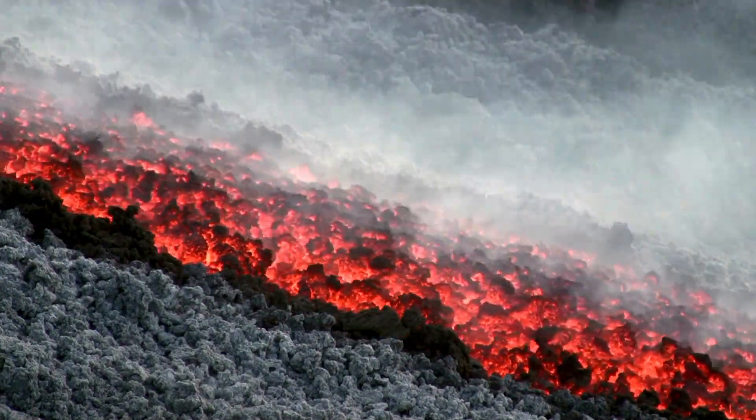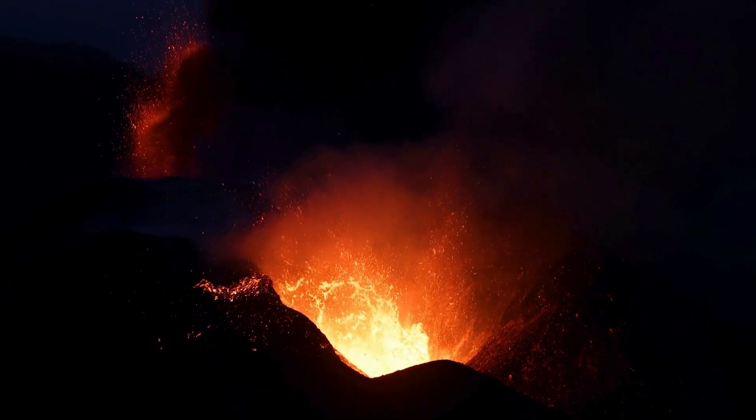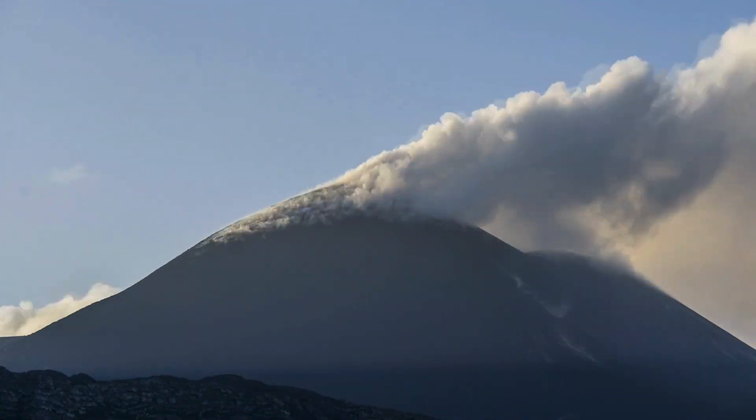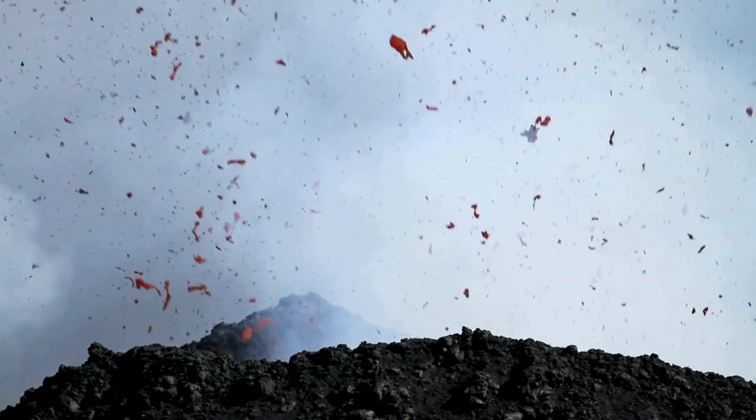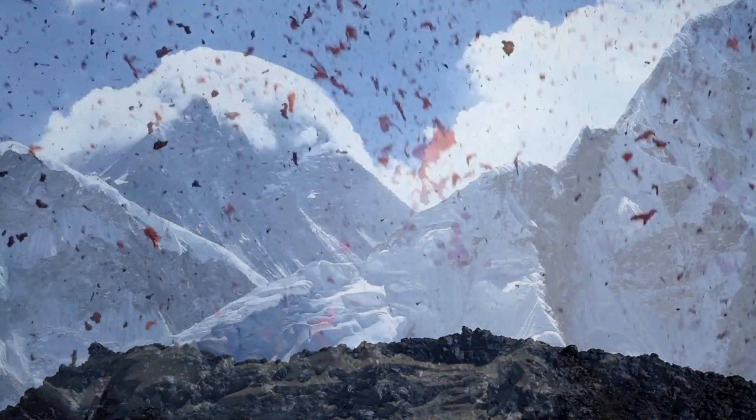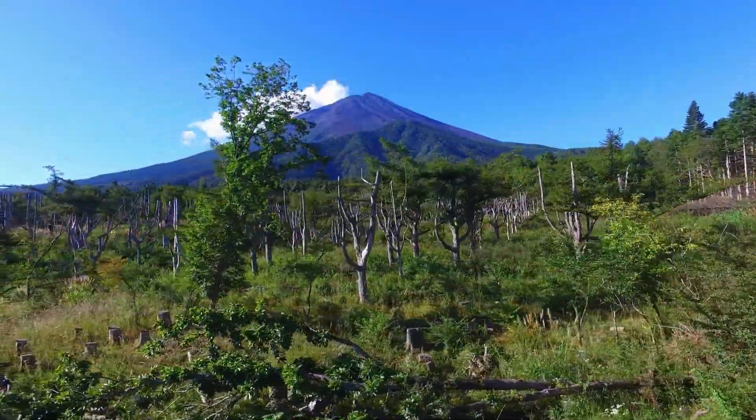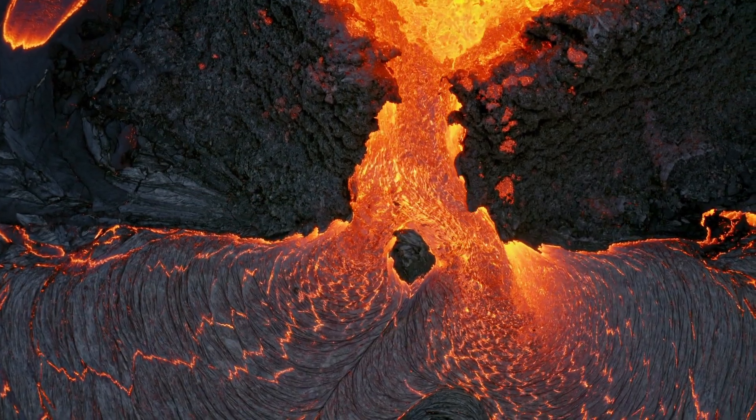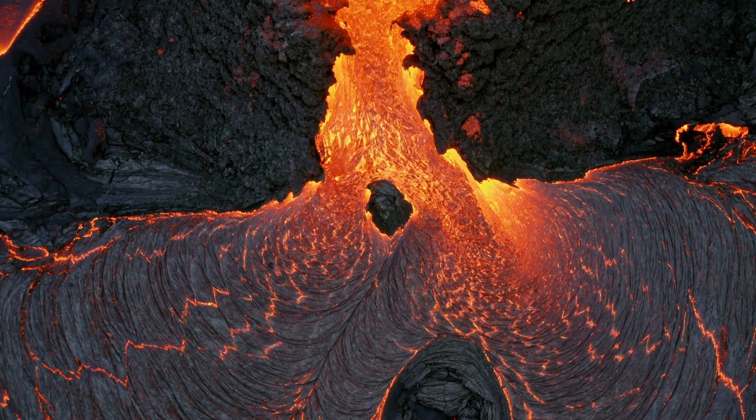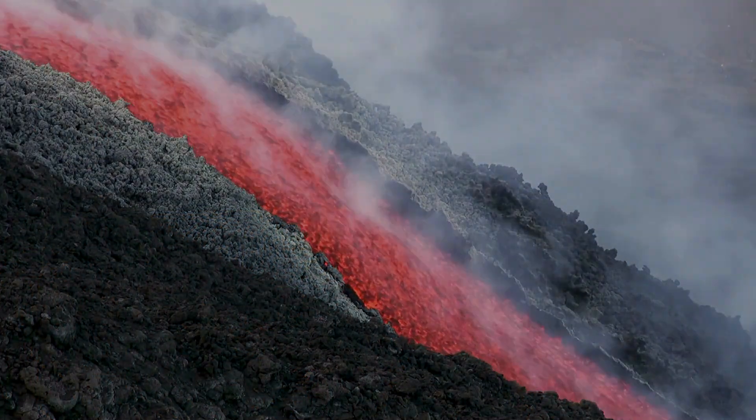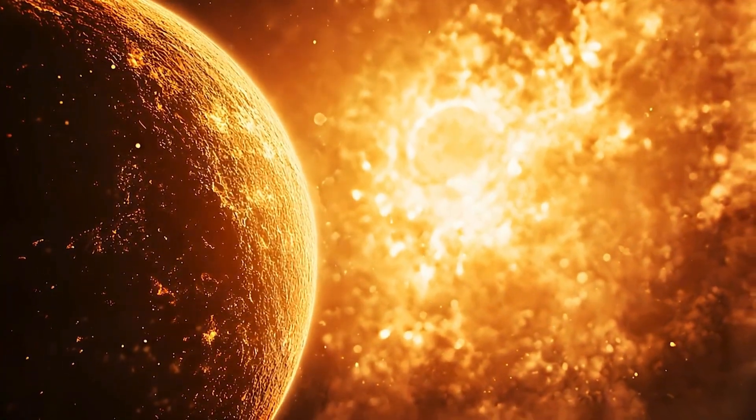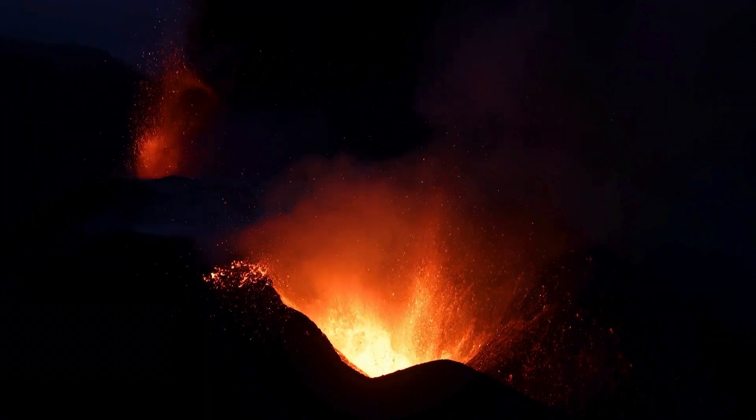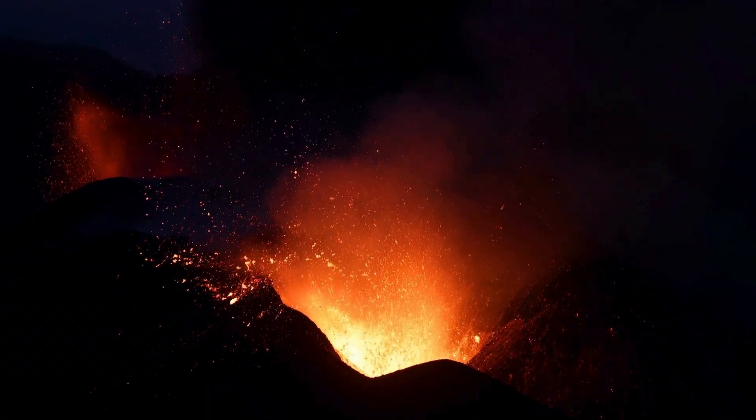Beneath their fiery exteriors, volcanoes conceal a dazzling array of minerals, forged under unimaginable heat and pressure. As magma surges upward, it carries elements like gold, silver, and platinum, depositing them in veins that become vital to industries and ecosystems alike. Each eruption is a chapter in Earth's story, revealing ancient processes and ongoing transformations that connect the planet's molten core to the surface we inhabit. Silicate minerals form the backbone of volcanic rocks, weaving the structural and chemical fabric of Earth's dynamic crust. Feldspar, the most abundant mineral group, dominates with its plagioclase and orthoclase varieties. In volcanic settings, plagioclase is a cornerstone of basaltic and andesitic lava flows, contributing sodium, calcium, potassium, and aluminum. Olivine, with its magnesium and iron-rich composition, is a hallmark of basaltic lava, often erupted by shield volcanoes like those in Hawaii.